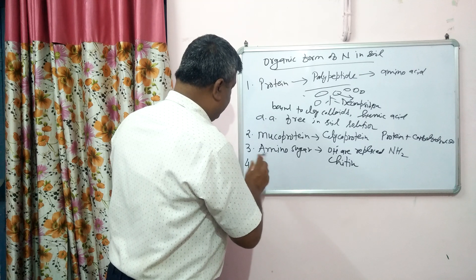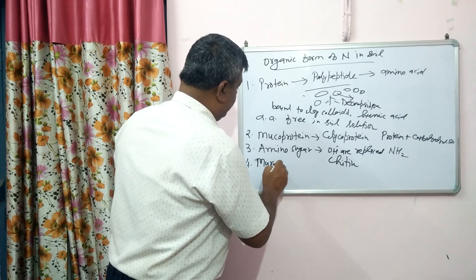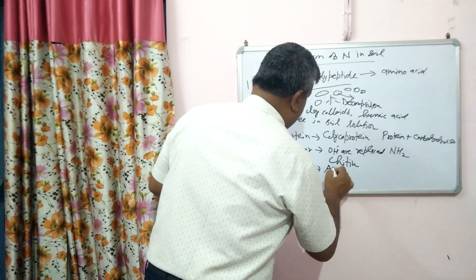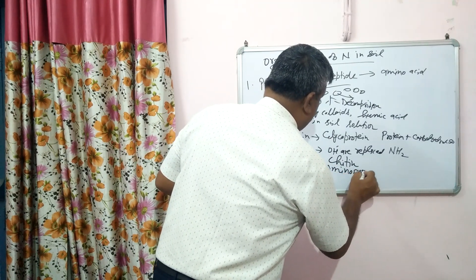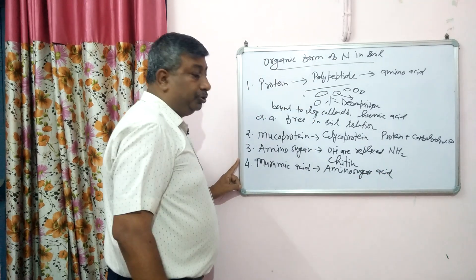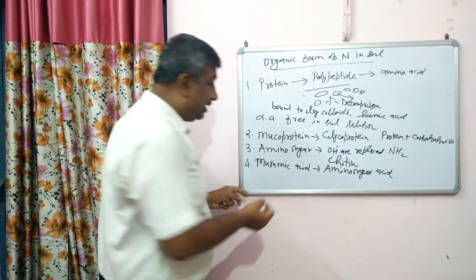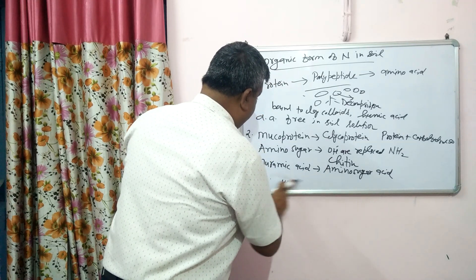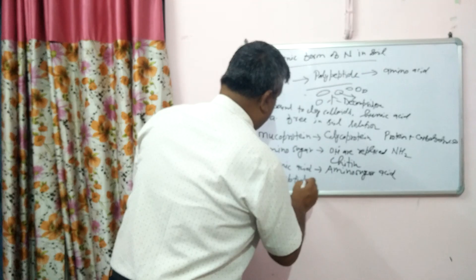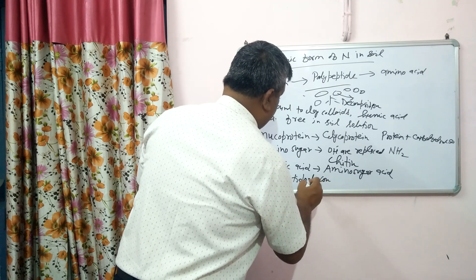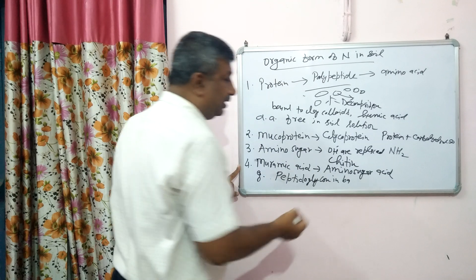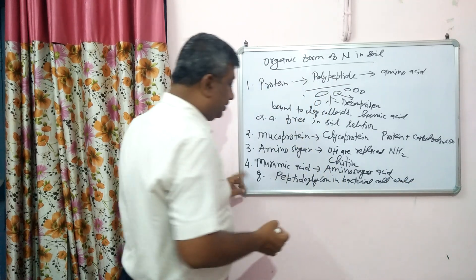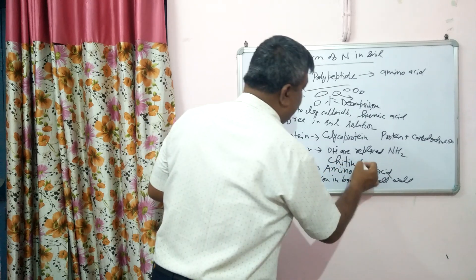Another organic form may be muramic acid. Muramic acid is actually an amino sugar acid — these are acids consisting of amino sugars — and a very good example is peptidoglycan in the bacterial cell wall. Chitin is present in fungi, while the bacterial cell wall consists of peptidoglycan, particularly containing muramic acid.